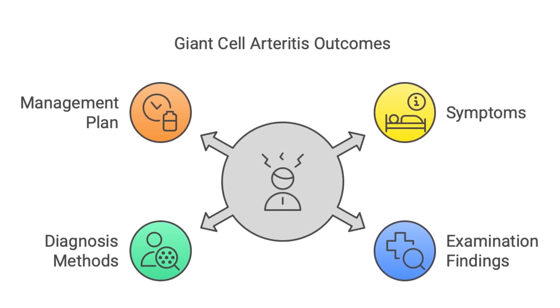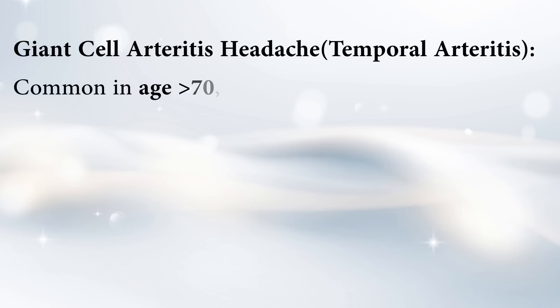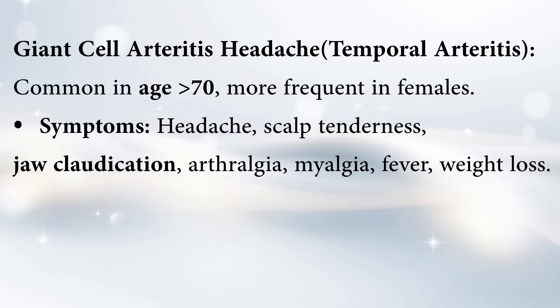Next is giant cell arteritis, also called temporal arteritis, which is most common in people over 70 and more often in women. It's basically when certain blood vessels, especially in the head and neck, get inflamed. Symptoms include headache, scalp tenderness where even brushing your hair can hurt, jaw pain when chewing — which they call jaw claudication — and also generally feeling achy, fever, and maybe losing weight without trying.